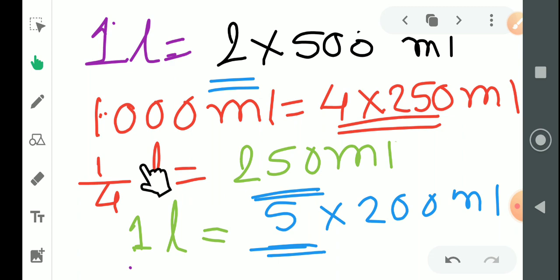Ab one fourth ka matlab kya ho ta hai bacho? Aadha ka aadha. Jaise hum ghar mein roti khate hai, to aadha ka aadha karke bhi deti hai. Iska hum one fourth kahte, quarter bhi kahte hai. Humne jo clock ka lesson padha tha us mein bacho yeh tha ki quarter past seven, quarter to seven. To one fourth hai, one fourth liter bacho hai two fifty ml. 250 ml ka matlab hai kya?